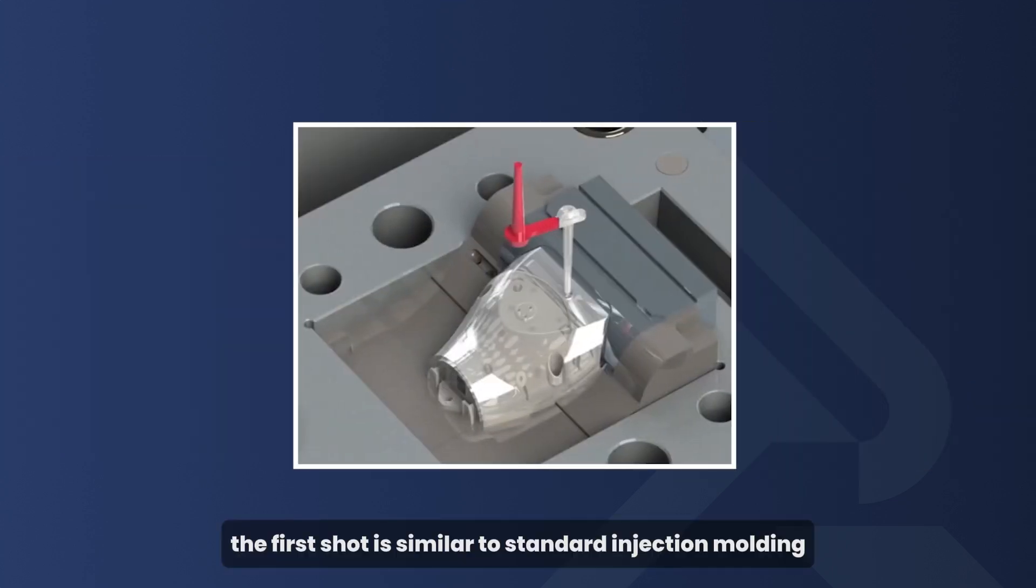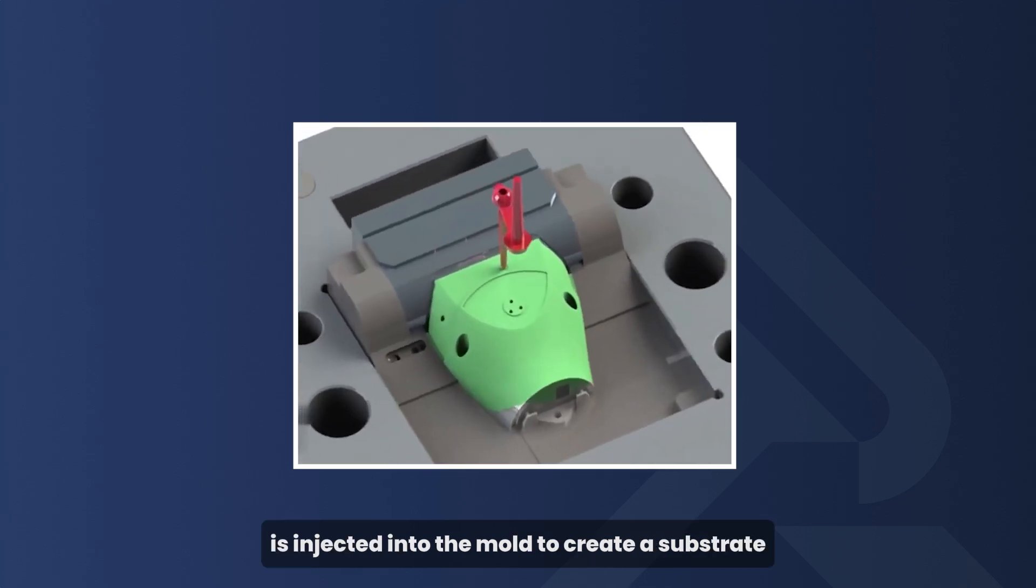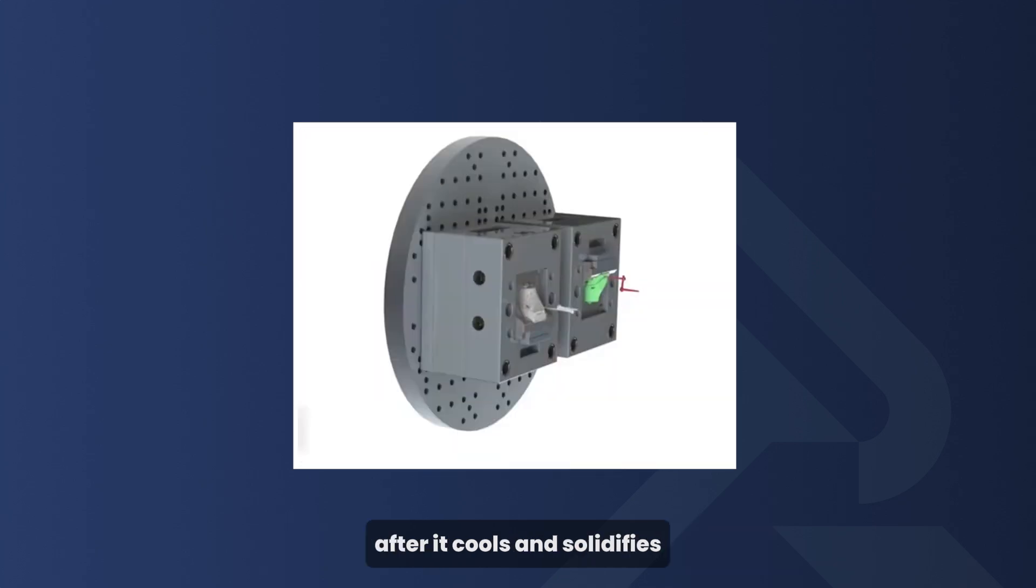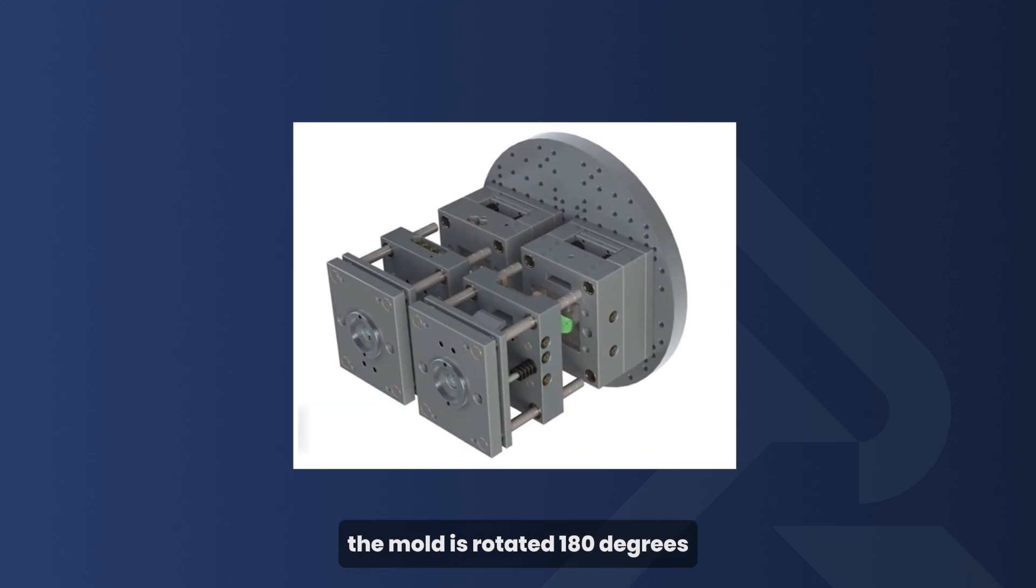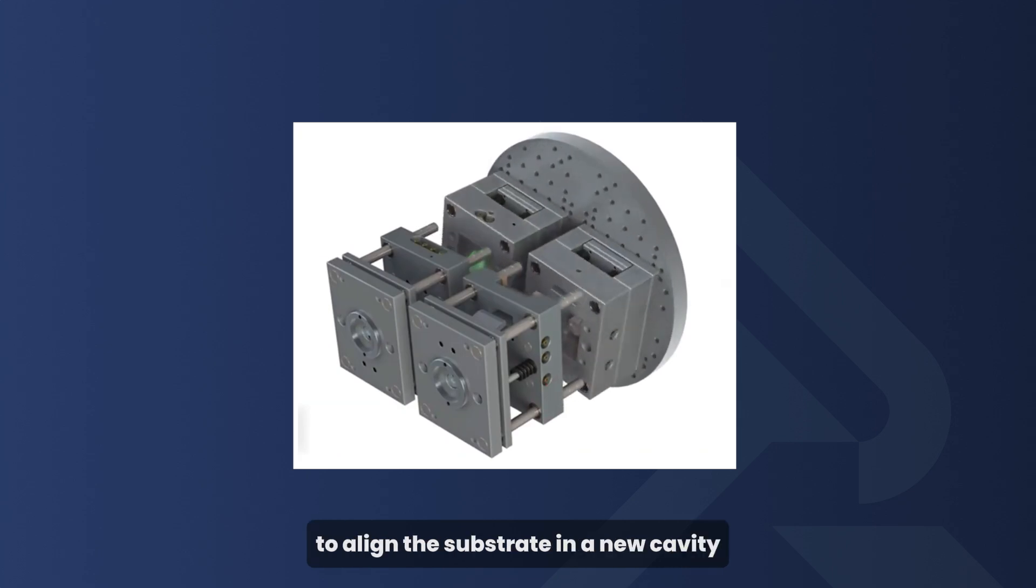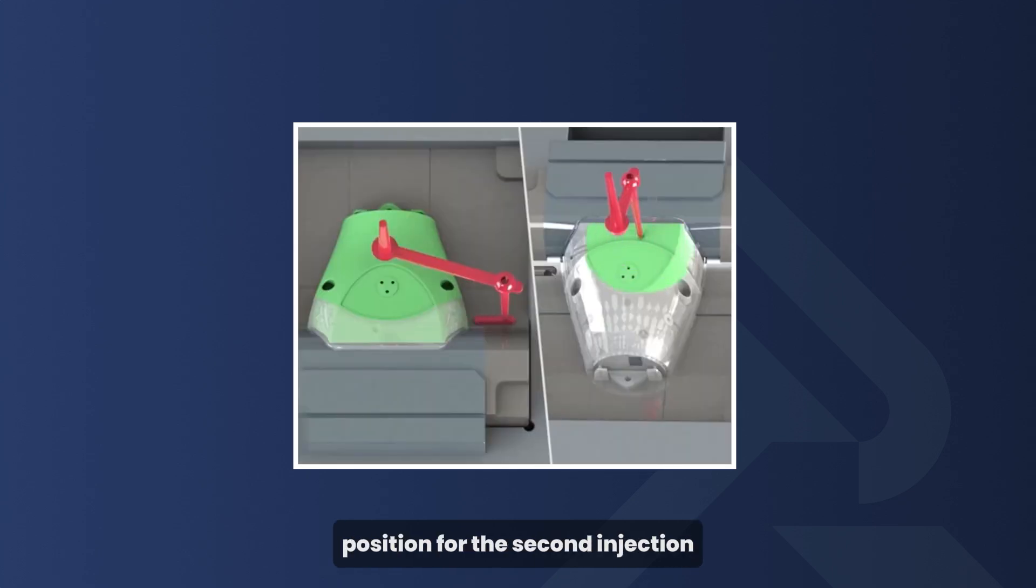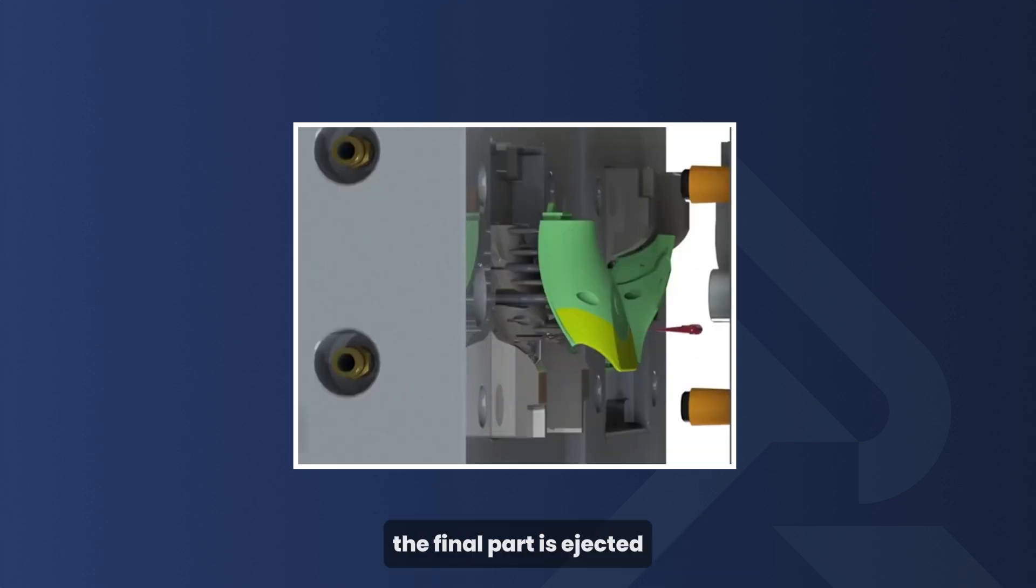The first shot is similar to standard injection molding, where the first plastic resin is injected into the mold to create a substrate. After it cools and solidifies, the mold is rotated 180 degrees to align the substrate in a new cavity position for the second injection. Once the second layer cools, the final part is ejected.